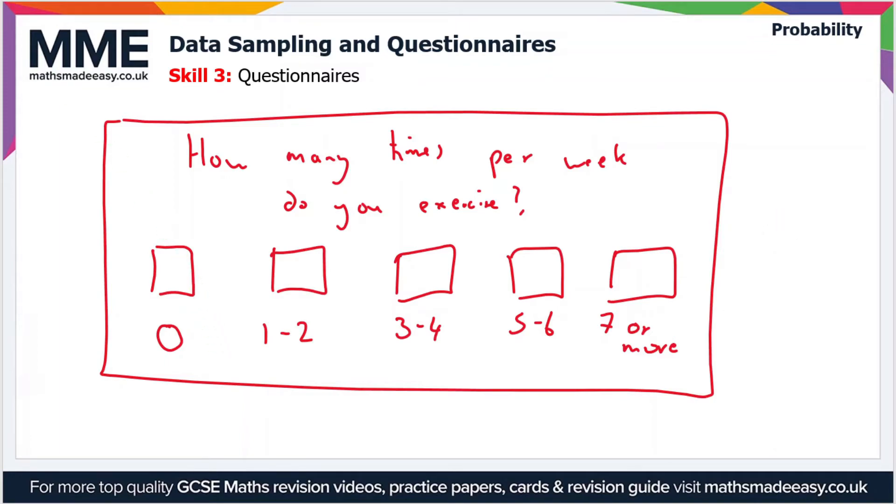In this simple questionnaire, we've covered pretty much everything. If someone does no exercise, they know which box to tick - it's the one on the left. If someone exercises four times a week, there's only one box that they would tick. If you exercise 10 times a week, you know which box to tick. Every option is included and there's a very good amount of options, so from this questionnaire we can collect some quite useful data.